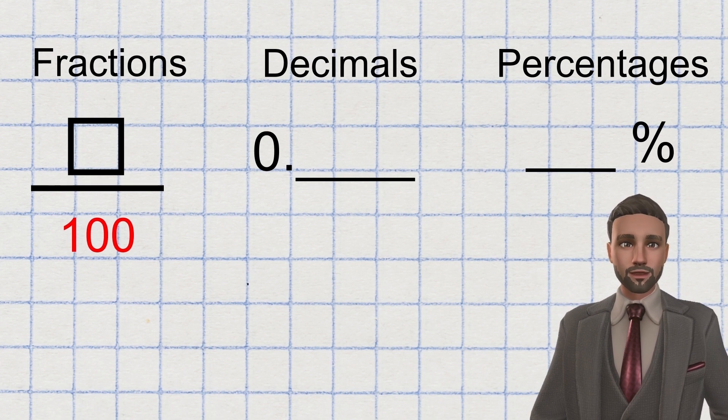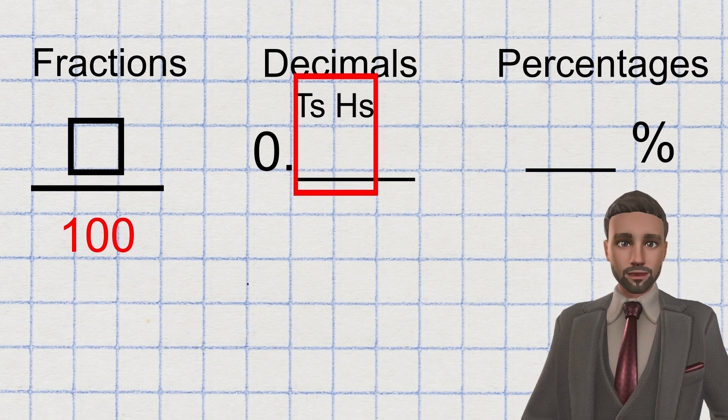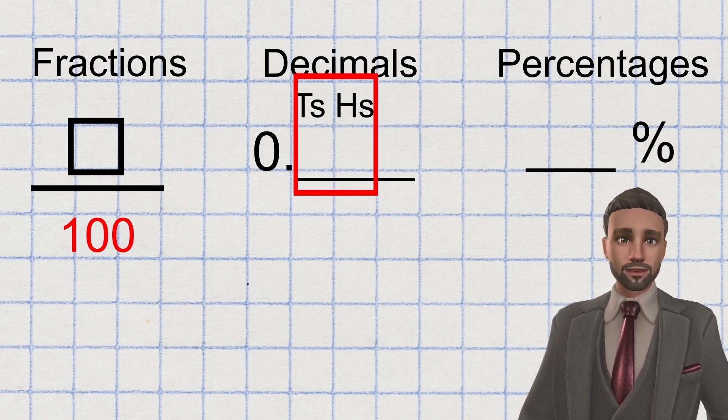When decimals are split into 100 parts, you have a digit in both of these columns. And percentages are always split into 100 pieces, as percent actually means per 100.